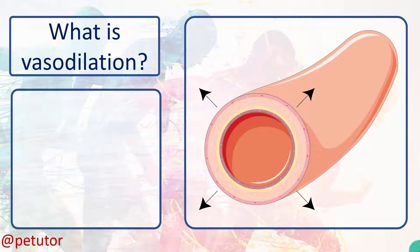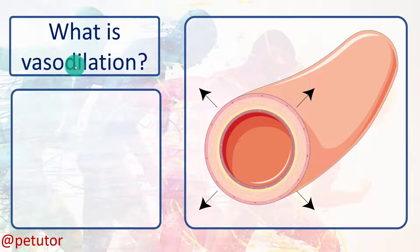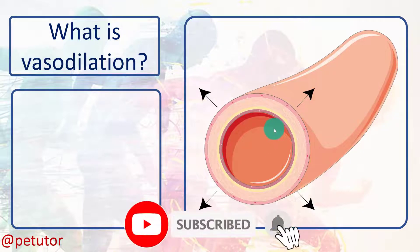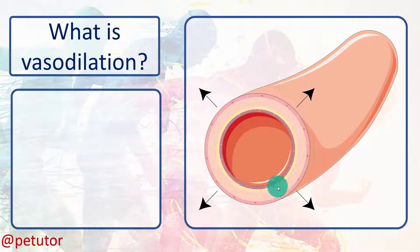What is vasodilation? Let's have a look at the breakdown of the word. Vaso means vessels, so blood vessels, and dilation means to get wider. Vasodilation refers to the blood vessels — usually the arteries — getting wider. The inside part of the blood vessel where the blood flows through gets much wider because the cells in the muscles relax.